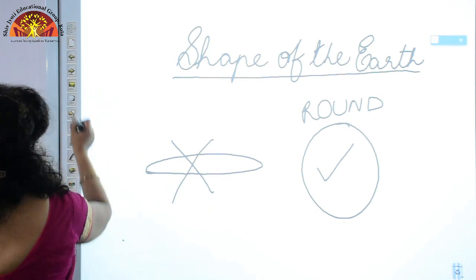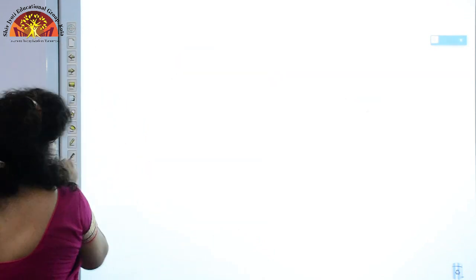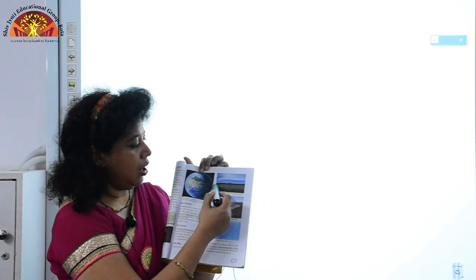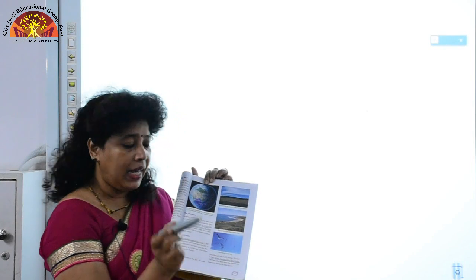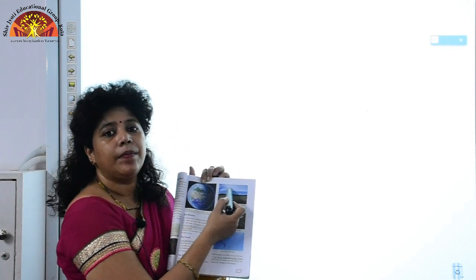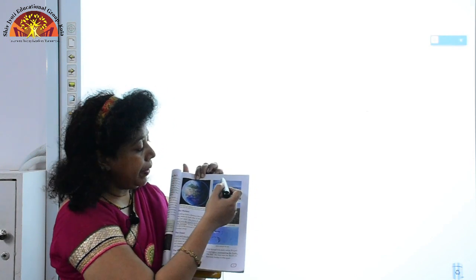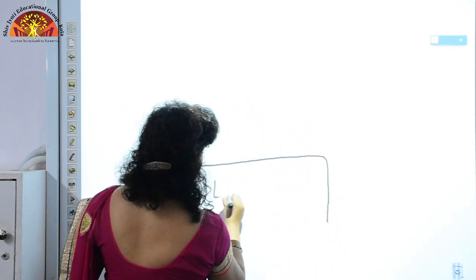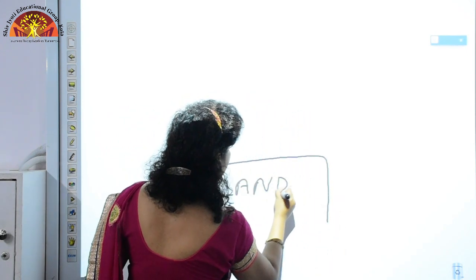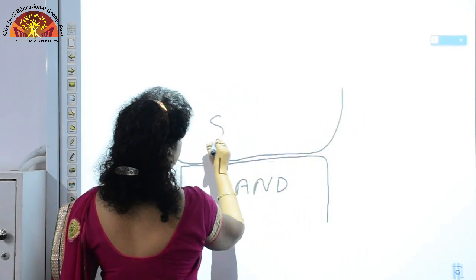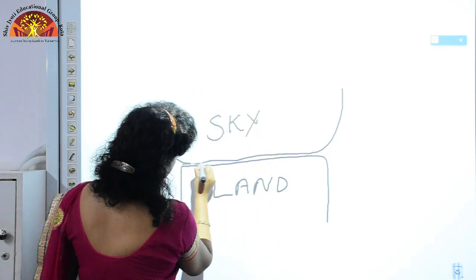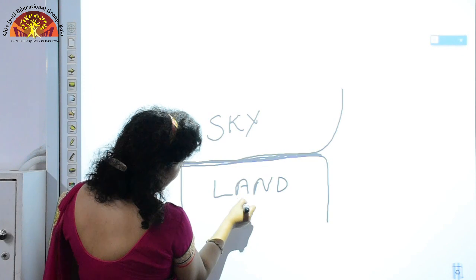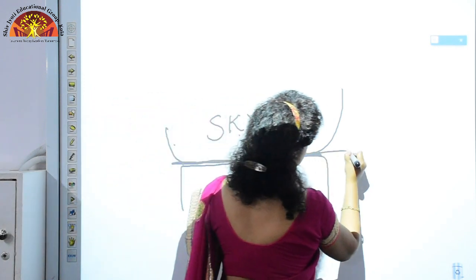Now let us learn about the horizon. If you open your textbook page number 9, you can see a picture of the horizon. What is the horizon? The place where the land appears to meet the sky is called the horizon. This is your land, and this is your sky — the place where the land appears to meet the sky is called the horizon.